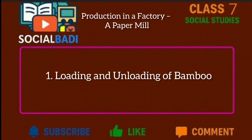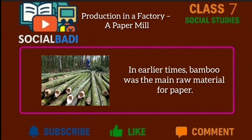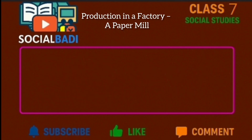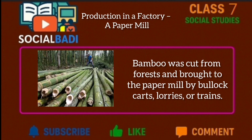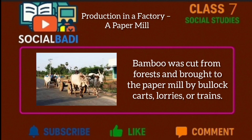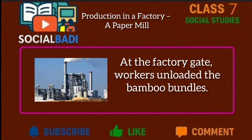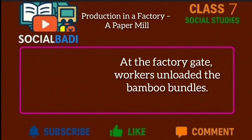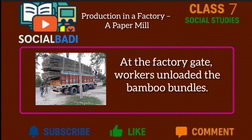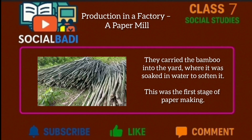Now let's see the loading and unloading of bamboo. In earlier times, bamboo was the main raw material for paper. Bamboo was cut from forests and brought to the paper mill by bullock carts, lorries or trains. At the factory gate, workers unloaded the bamboo bundles. They carried the bamboo into the yard where it was soaked in water to soften it. This was the first stage of paper making.